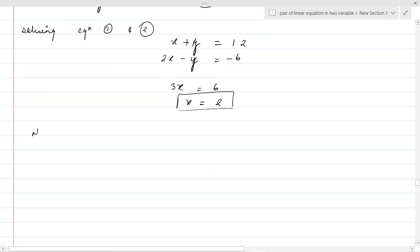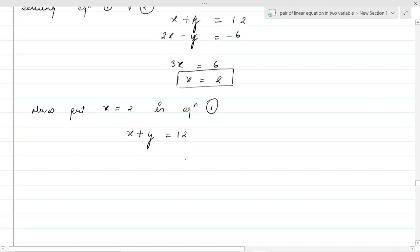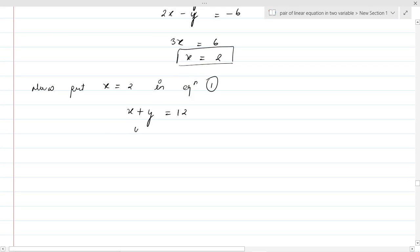Now put x equal to 2 in equation first. First equation is x plus y equal to 12. Put x equal to 2, then y equal to 12 minus 2 which is 10. So hence y equal to 10.